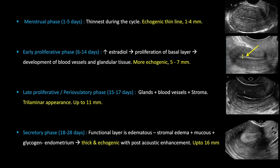An important caveat: none of these numbers are hard and fast rules. A thickness may go beyond these set limits and yet be normal. If the patient is asymptomatic, we can follow up in the next cycle to confirm it was just a variation — the endometrium can waver from the mentioned normal thickness and still be normal.